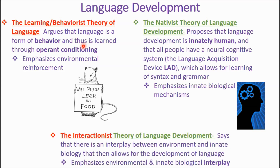The third theory is the interactionist theory of language development. It emphasizes the interplay between environmental cues and innate biology in the development of language. It argues that the human brain develops so that it can be receptive to new language in order to communicate and socialize. We need both the environment and the brain to develop language — if we lack one or the other, we won't develop language.